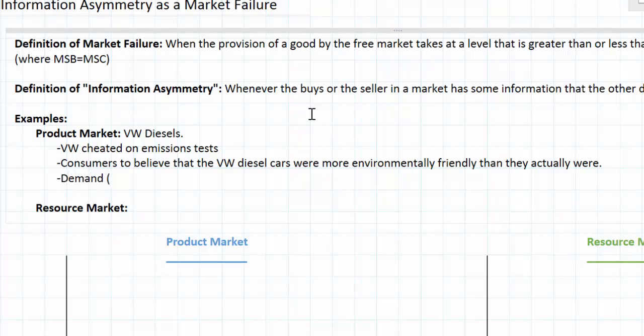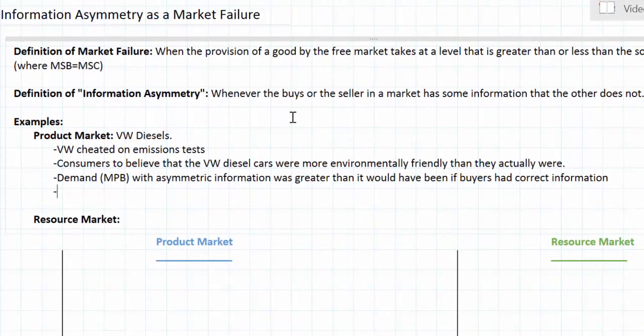The demand, which represents the marginal private benefit among VW consumers for these automobiles with asymmetric information, was greater than it would have been if buyers had correct information about these cars. But because of the higher demand for Volkswagen cars due to the false information that Volkswagen was providing its consumers...